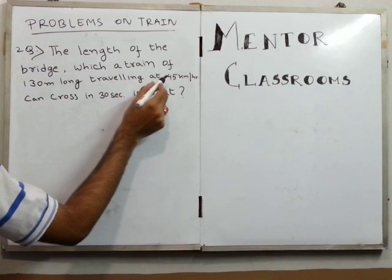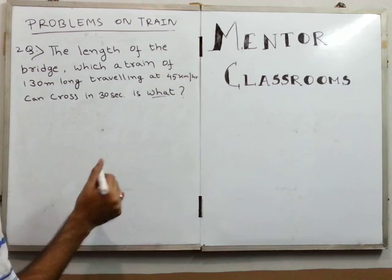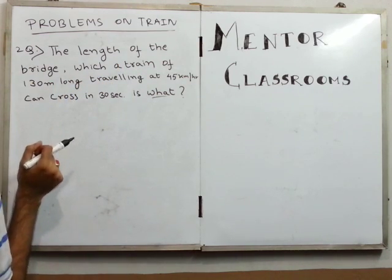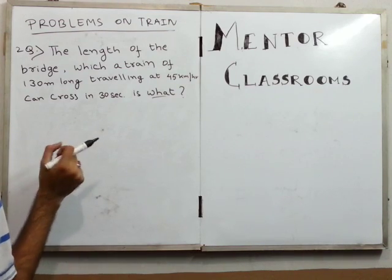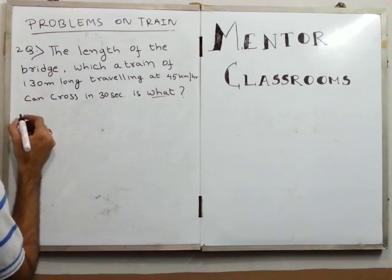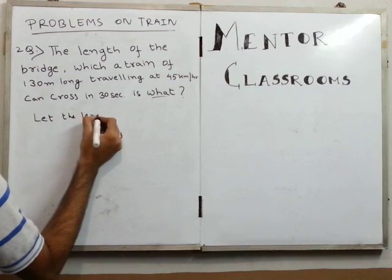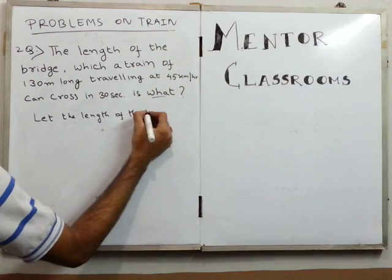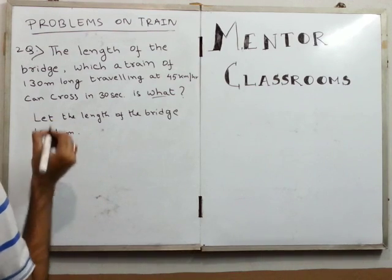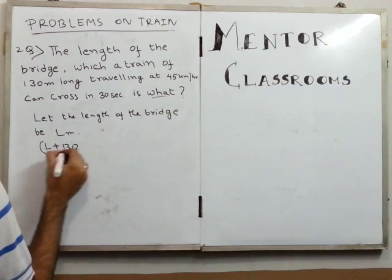The next problem: find the length of the bridge which a train of 130 meters long, traveling at 45 km/h, can cross in 30 seconds. When a train crosses a platform, a bridge, or any object of some length, it crosses its own length plus the length of the object. Here the object is a bridge. Let the length of the bridge be L meters.